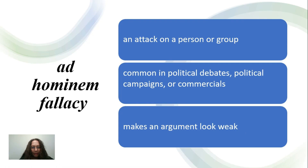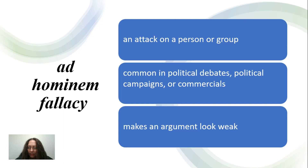So let's start with the first one: the ad hominem fallacy. An ad hominem fallacy is an argument that is aimed at the character of the person rather than focusing on the quality of that person's reasoning or performance. Therefore, it is an attack on the person or a group of people, and that is done to draw attention away from the important issue of the debate and focus instead on the character of the person.